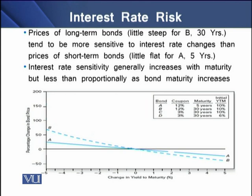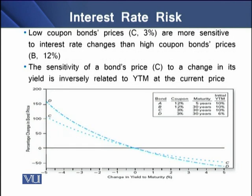Prices of long-term bonds tend to be more sensitive to interest rate changes than prices of short-term bonds. We have bond B, which is 30 years and shows a steeper curve, compared to bond A which has a maturity of 5 years and shows a flatter curve. Interest rate sensitivity generally increases with maturity but less than proportionally as bond maturity increases. Additionally, low coupon bond prices are more sensitive to interest rate changes than high coupon bond prices, as seen with bond C which has a coupon rate of 3% compared to the 12% coupon rate of bond B.